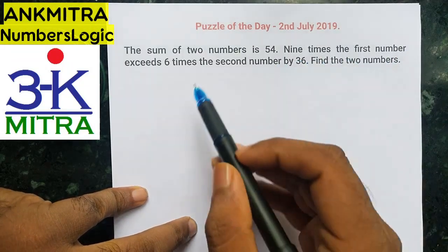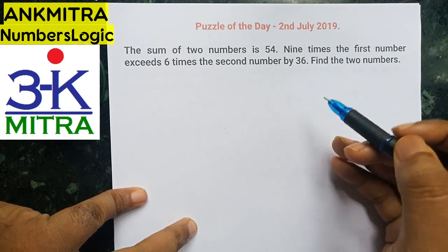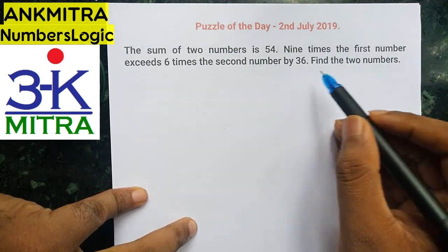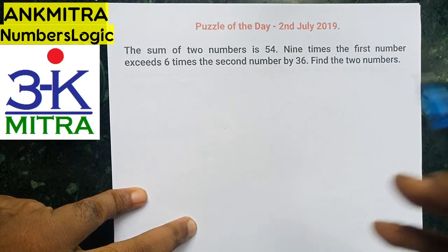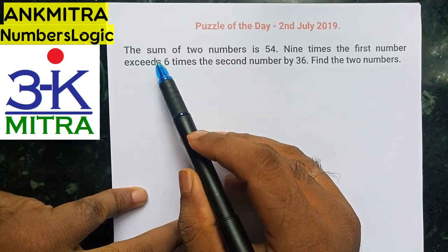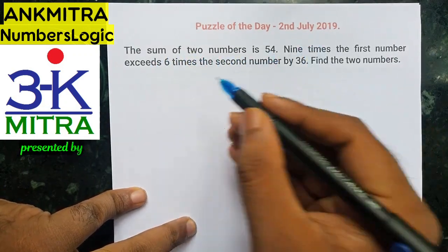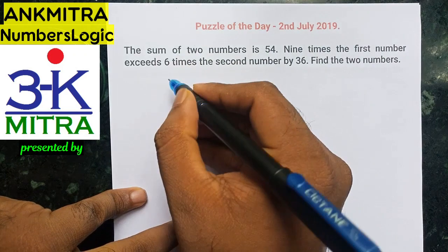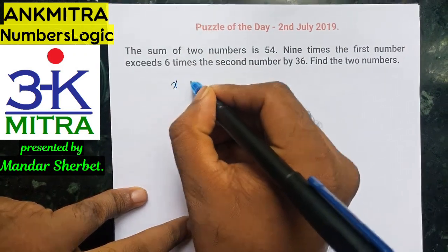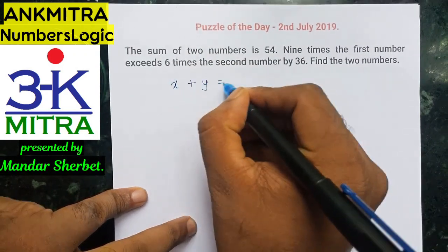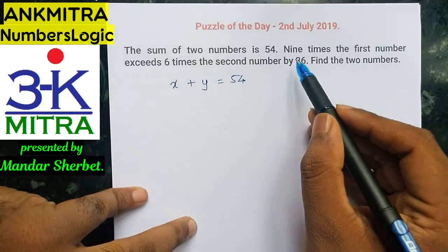In this question we are required to find two different numbers, so let's take the two numbers as x and y. From the given information, the sum of the two numbers is 54, that means the first equation we have is x plus y is equal to 54.